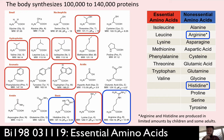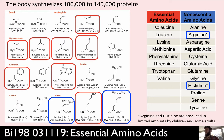Arginine and histidine are sometimes considered essential amino acids because some adults and all children are not able to make adequate amounts of these two. The reason is that children are in a positive nitrogen balance, so they have increased requirements for these amino acids compared to the volume of food they're consuming.